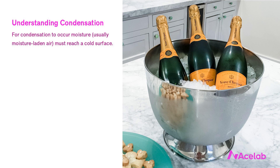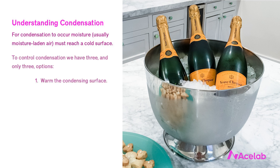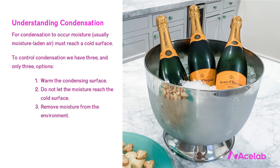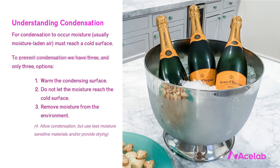For condensation to occur, moisture-laden air must reach a cold surface. To prevent condensation, we have three options: we can warm the condensing surface (no cold surface, no condensation); we can prevent moisture from reaching the cold surface; or we can remove moisture from the environment, usually by dehumidifying. In building design, we don't actually need to prevent condensation — we need to control it. A little condensation is okay as long as it doesn't cause building materials to decay. This introduces a fourth option: allow condensation to occur, but either use materials that aren't at risk of damage or provide enough drying to prevent damage. We usually pursue these four strategies in combination.